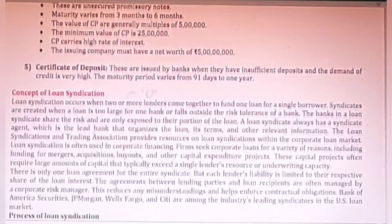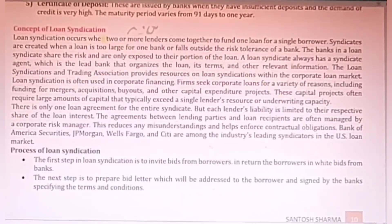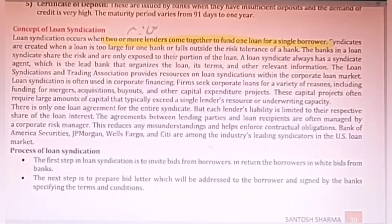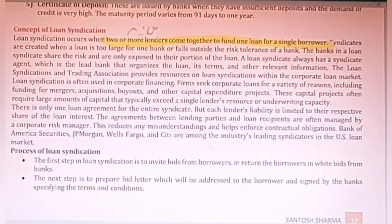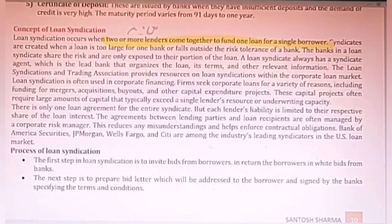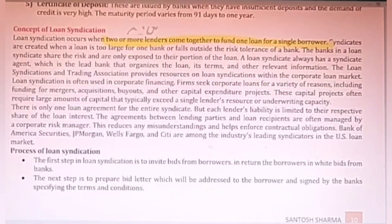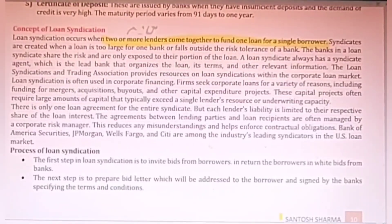The next concept is loan syndication. It occurs when two or more lenders or banks come together to fund a single borrower. If the loan amount is very high, it is not possible to arrange such a huge amount from a single bank, so it can ask other banks to collaborate and give a loan to the borrower. That is called loan syndication. You should know the process of loan syndication.